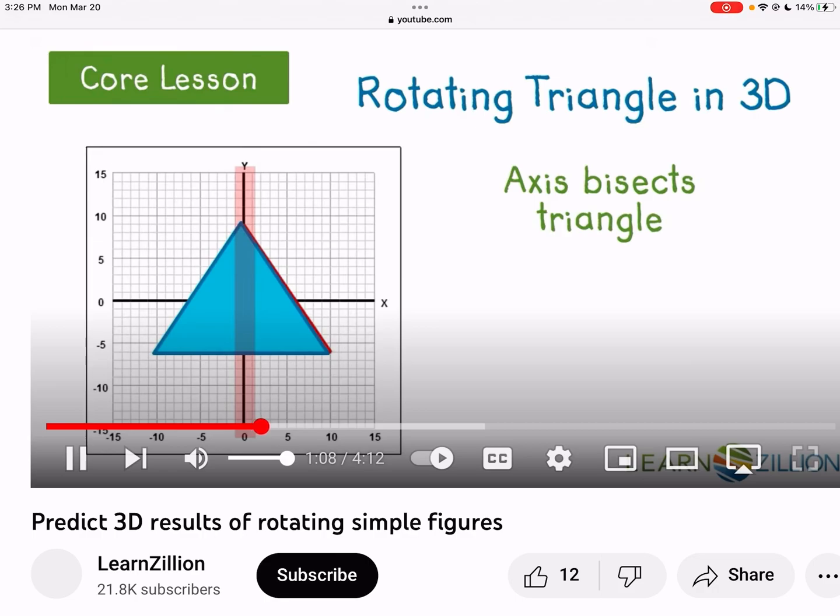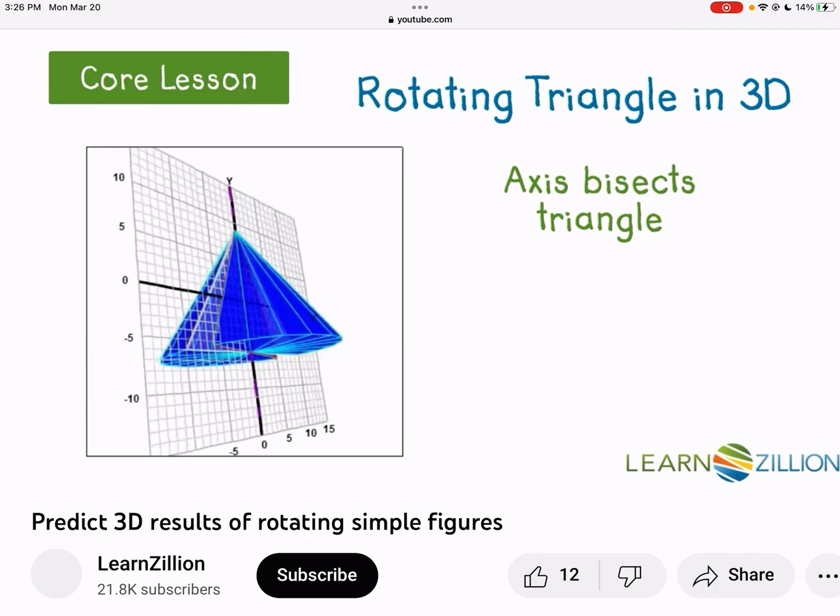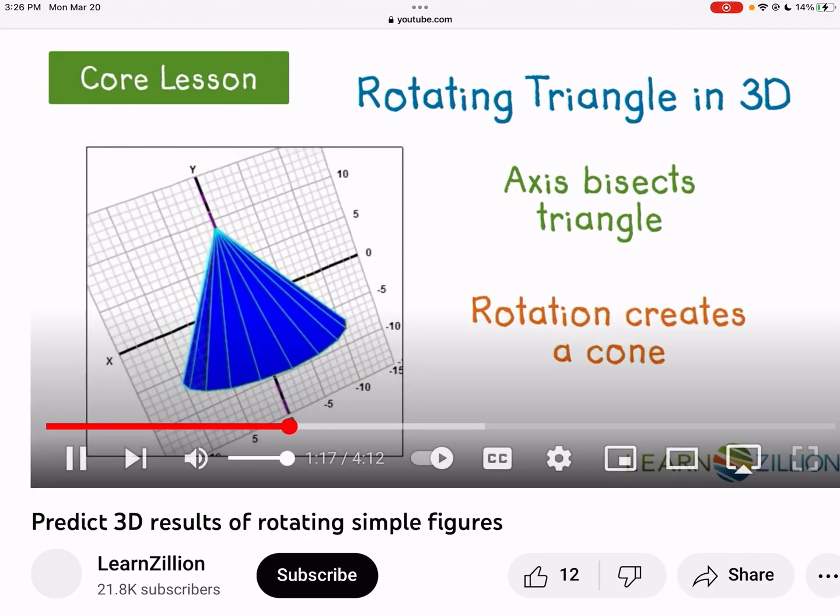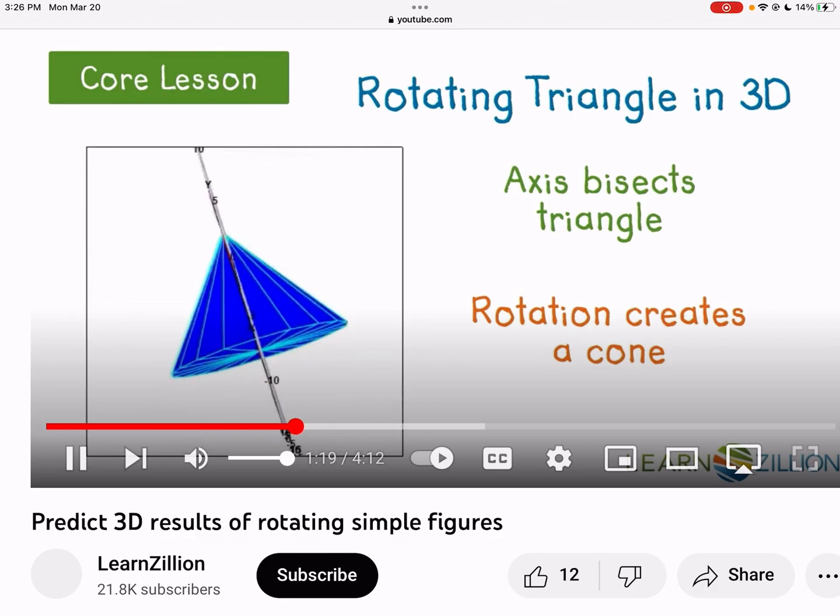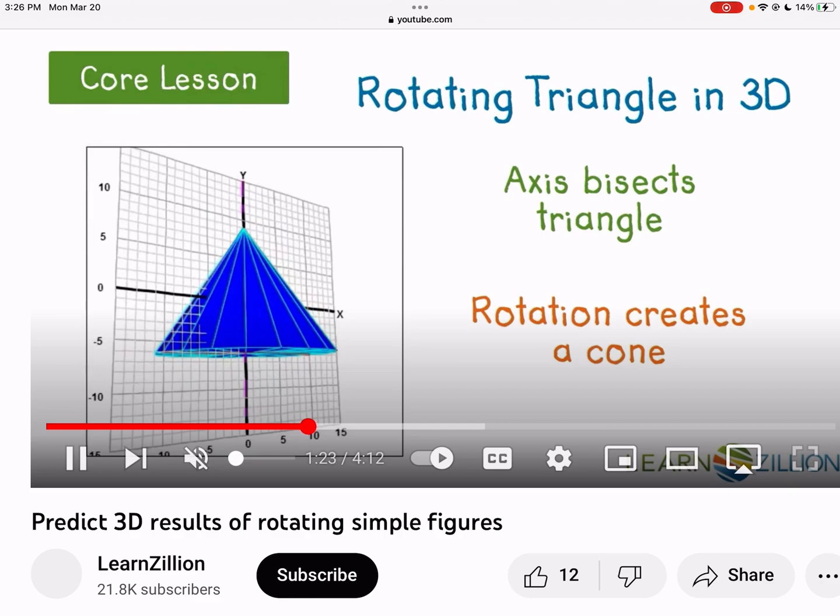So we're taking this triangle, we're spinning it around the y-axis. It's filling everything in. The edge that was perpendicular to the axis drew a flat surface as it rotated. And the other two edges as they... so it ends up making this cone here.